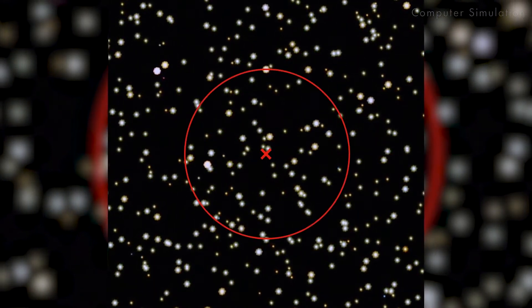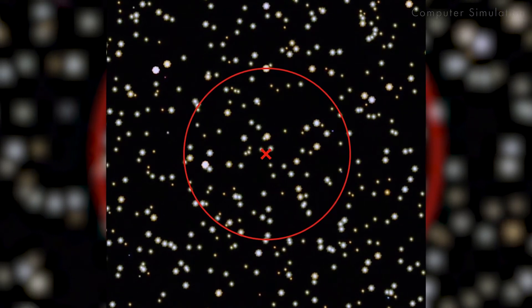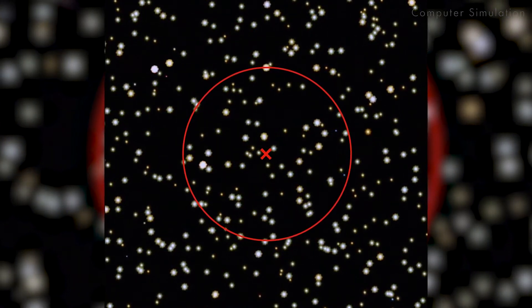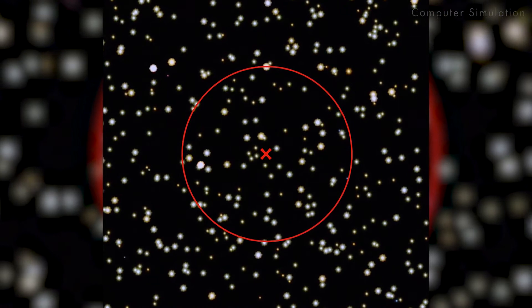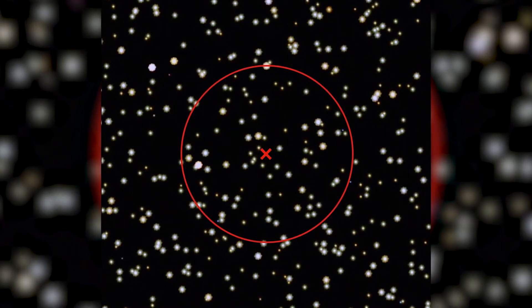They calculated the suspected black hole's mass by studying the motion of stars caught in its gravitational field using twelve and a half years worth of Messier 4 observations from Hubble. The researchers estimate that the black hole could be as much as 800 times the mass of our sun.